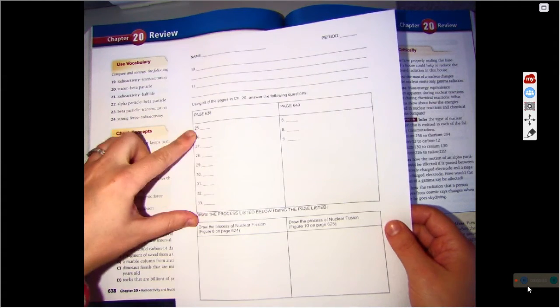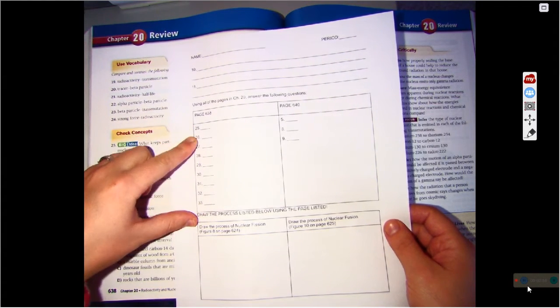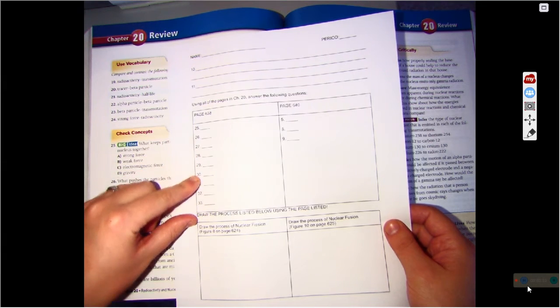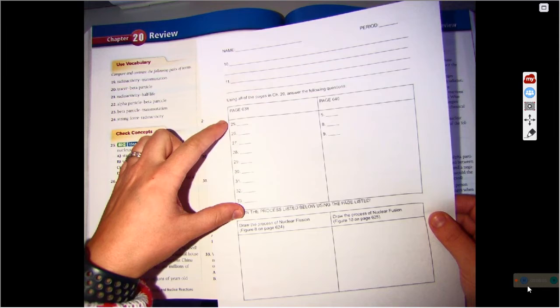Okay, 638. Now, be careful. I have skipped some questions. I can go 25, 26, 27, 28, 29, 30, 31. Well, actually, I didn't skip any right here. But be sure you only do the questions that I asked you to do.